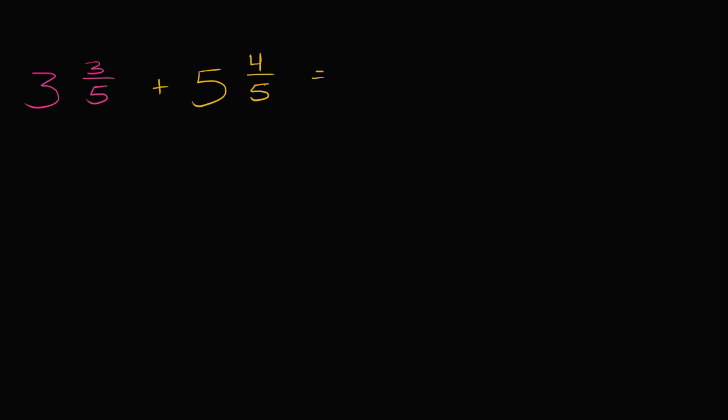Well if you do the same technique, if you add the three plus the five, you're going to get eight. And then if you add the three-fifths plus four-fifths, you would get seven-fifths. So you get eight and seven-fifths. And this wouldn't be wrong, but it's a little bit strange here because seven-fifths is bigger than a whole.